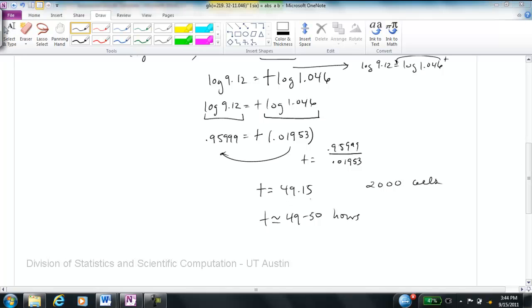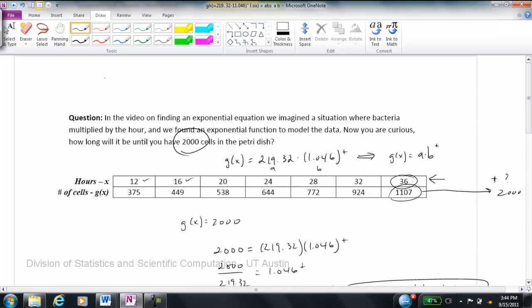Because it's not going to hit it until after 49, I'm going to say that we will see 2,000 cells in the petri dish between 49 and 50 hours after the experiment begins.